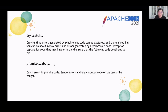Exceptions are everywhere and exist in a variety of application scenarios. How can we effectively intercept exceptions and handle errors so that users are unaffected? The first method is try-catch. Only runtime errors generated by synchronous code can be captured; there is nothing you can do about syntax errors and errors generated by asynchronous code. Use try-catch around code that may have errors to ensure that the following code continues to run.